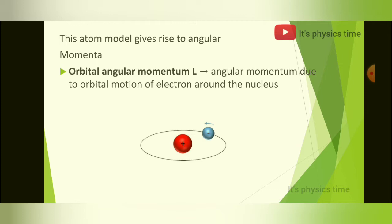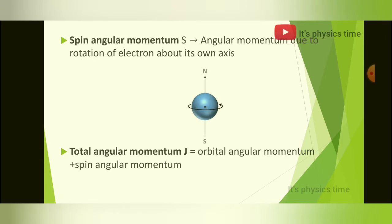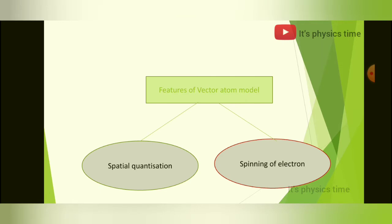This picture shows the orbital motion of the electron around the nucleus. The angular momentum due to the rotation of the electron about its own axis is known as spin angular momentum, which is denoted as S. This picture shows the rotation of the electron about its own axis. The sum of orbital and spin angular momentum is known as total angular momentum, which is represented as J.